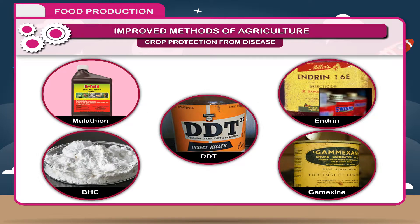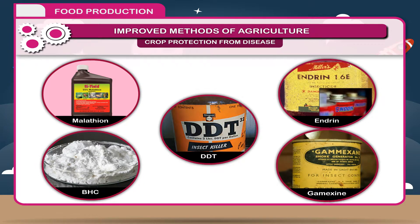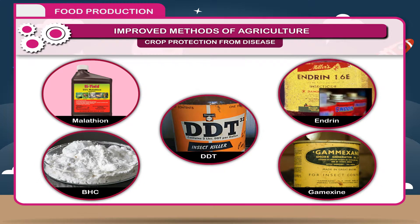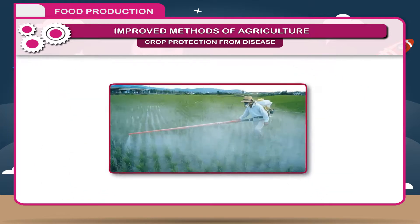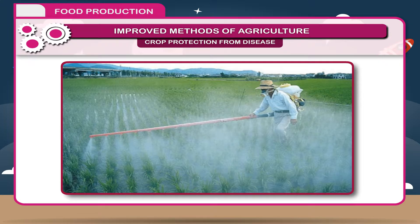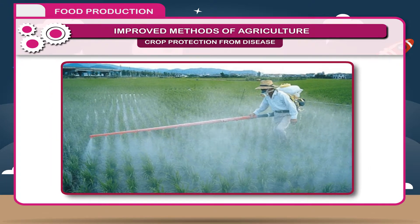Due to side effects of pesticides, scientists have developed a special class of pesticides which kill only specific pests without affecting other organisms. These are prepared from living organisms and are called biocides.